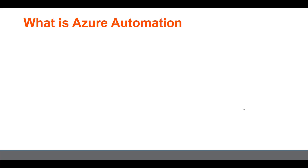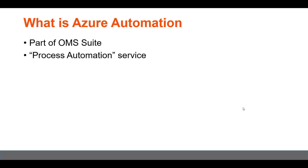Let's start with talking about what Azure Automation actually is. Azure Automation is part of the OMS suite offering from Microsoft. This is a process automation service in which the underlying infrastructure is provided by Microsoft. We don't control, patch, or manage the underlying infrastructure — you just inform Azure Automation what you want to automate, and the automation is provided out of the box to you as a service.